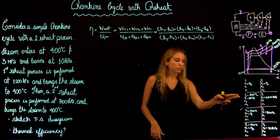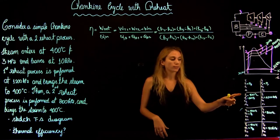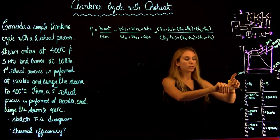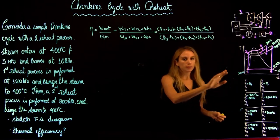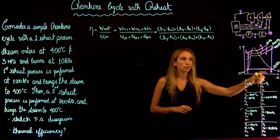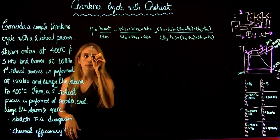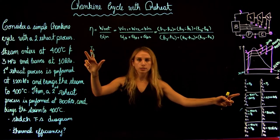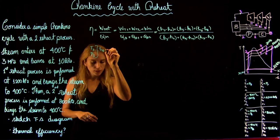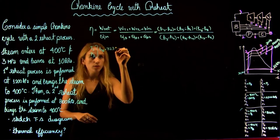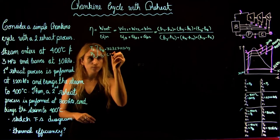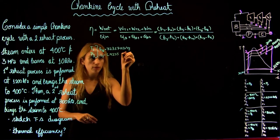We need to find all the enthalpies. H3, H5, and H7 can be obtained directly from the steam tables since we have both temperature and pressure at those states. At state three, temperature is 400°C and pressure is 3 MPa. From the tables, we obtain an enthalpy H3 of 3231.7 kJ/kg and an entropy S3 of 6.9235 kJ/(kg·K).